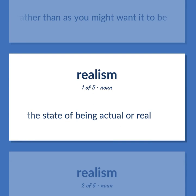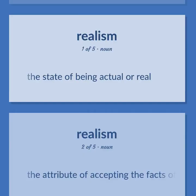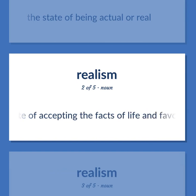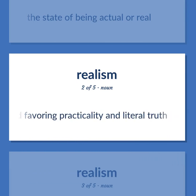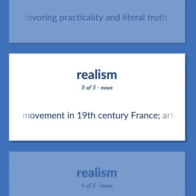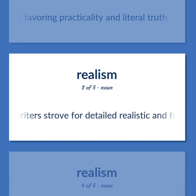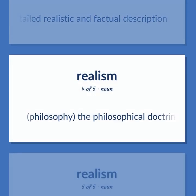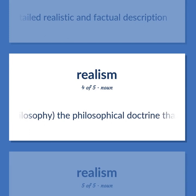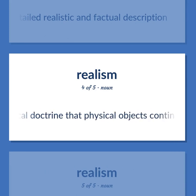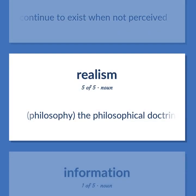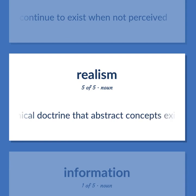The state of the world as it really is rather than as you might want it to be. The attribute of accepting the facts of life and favoring practicality and literal truth. Realism: An artistic movement in 19th century France — artists and writers strove for detailed, realistic, and factual description. Philosophy: The philosophical doctrine that physical objects continue to exist when not perceived; also that abstract concepts exist independent of their names.